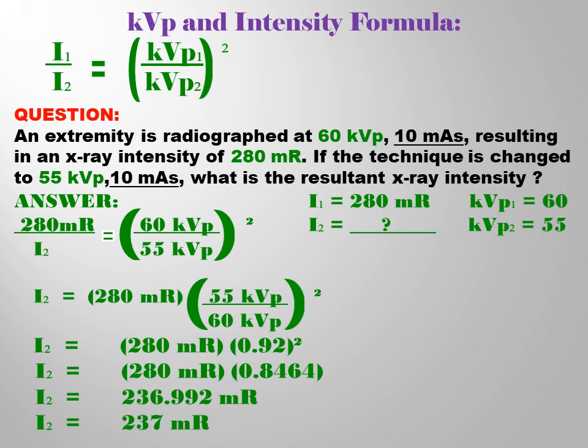Question: An extremity is radiographed at 60 KVP, 10 mAs, resulting in an X-ray intensity of 280 mR.